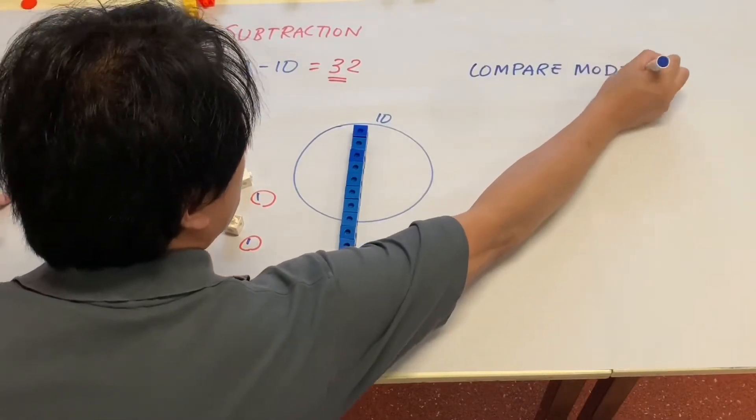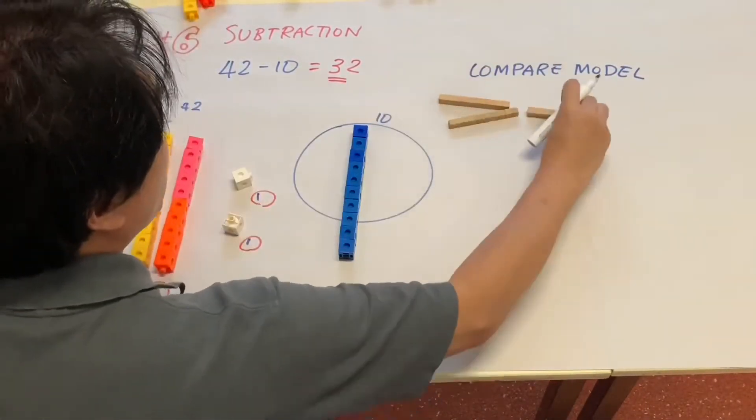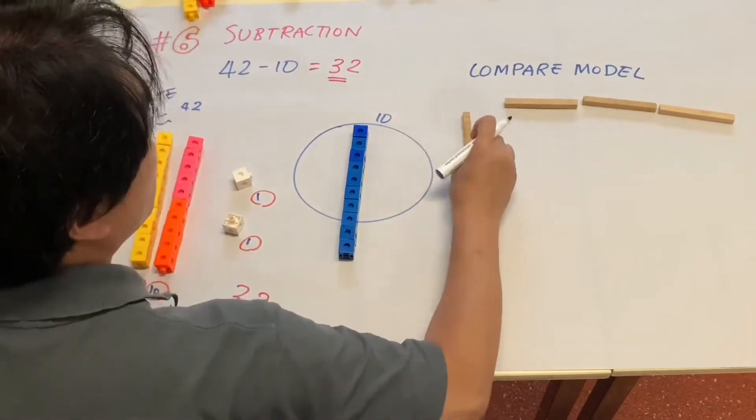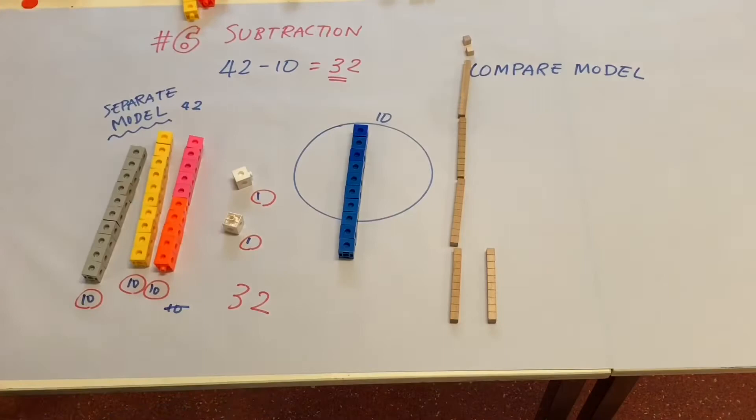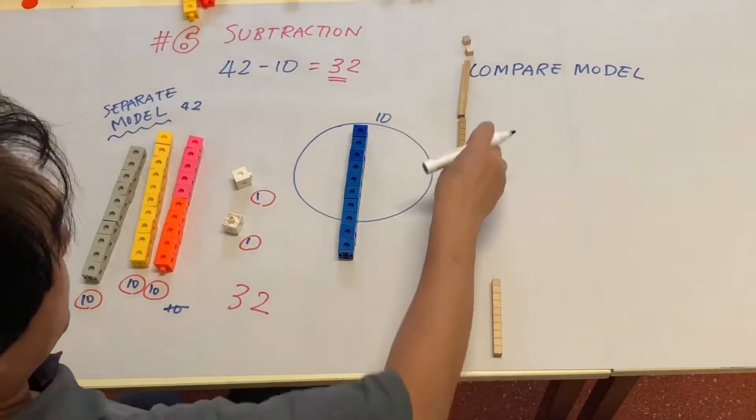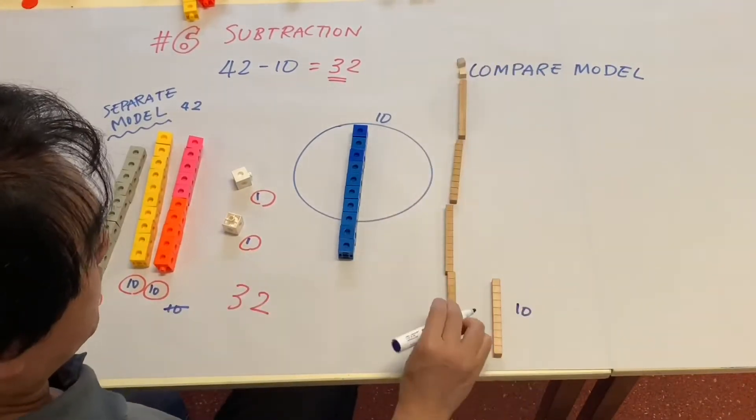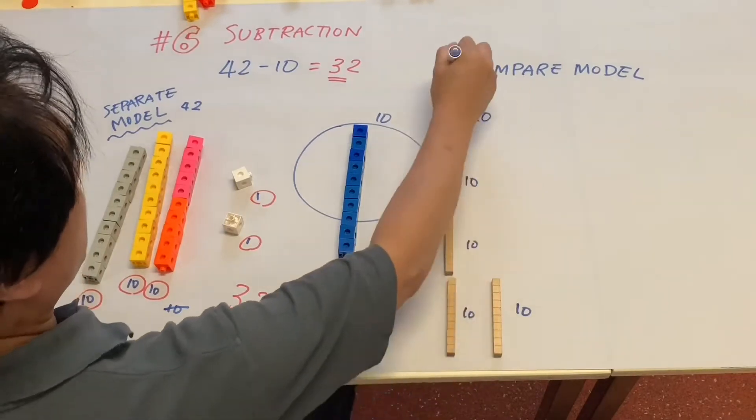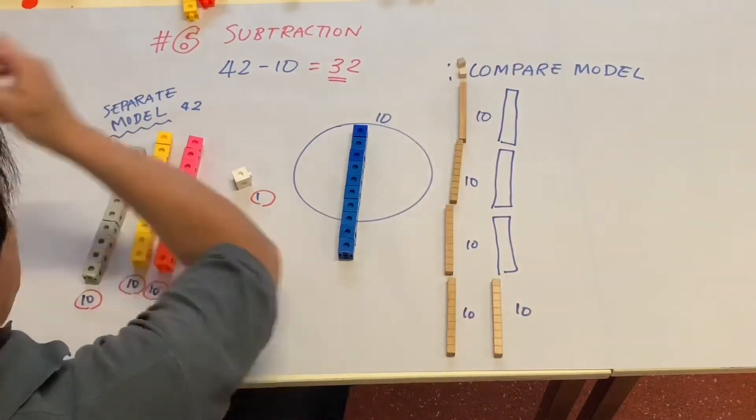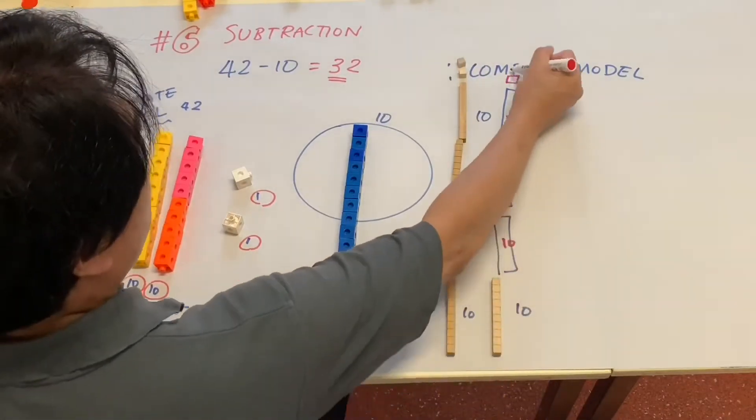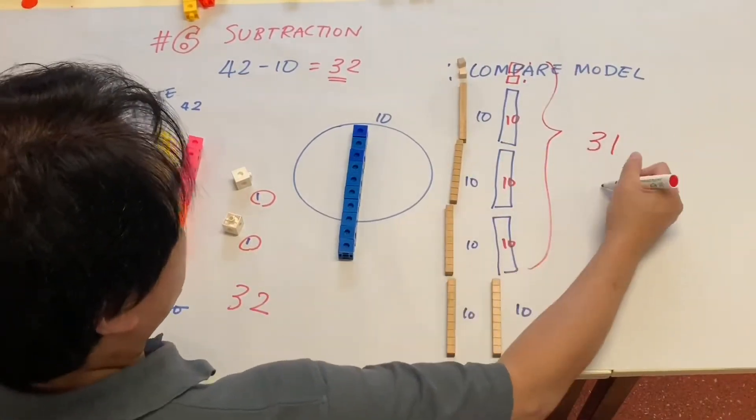You can use a compare model, which is 42 and a 10. 42 is 32 more than 10, so the answer is 32.